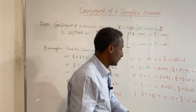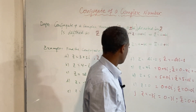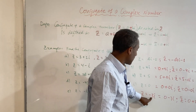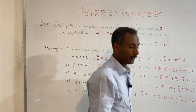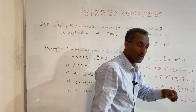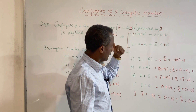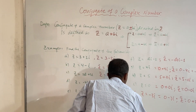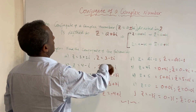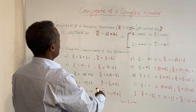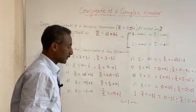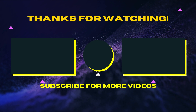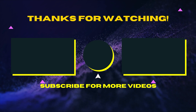To summarize: the conjugate of minus i is plus i, and the conjugate of minus 4i is plus 4i. When your complex number has both a real and imaginary part, you change the sign of the imaginary part. Thank you for watching.